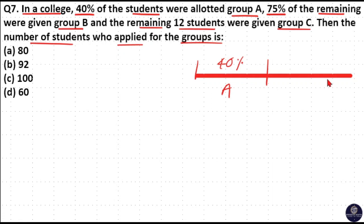Then, out of the remaining 60%, 75% were given group B. That means the remaining is 100 minus 75, which is 25%. So 25% out of the 60% were given group C, and this 25% out of 60 is 12 students.